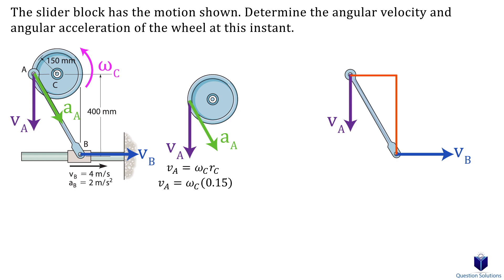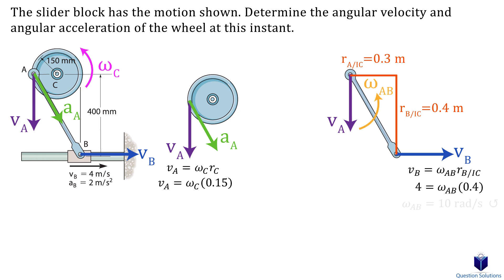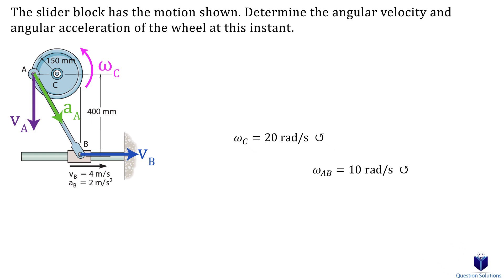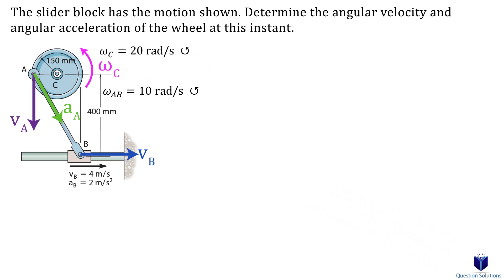We draw two lines perpendicular to the velocity vectors and wherever they cross is the IC point. We don't need to calculate any angles because all the lengths are given: from B to IC is 0.4 meters, and from A to IC is 0.3 meters, which is the diameter of the wheel. The velocity at B equals the angular velocity of link AB multiplied by the distance from B to IC. We're given the velocity at B so we solve for the angular velocity of link AB. Then we find the angular velocity of the wheel using v_A and the angular velocity of link AB.